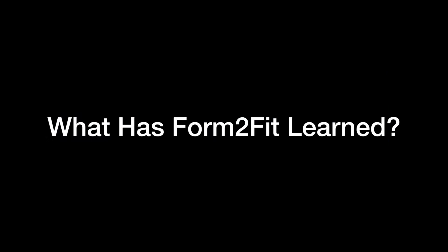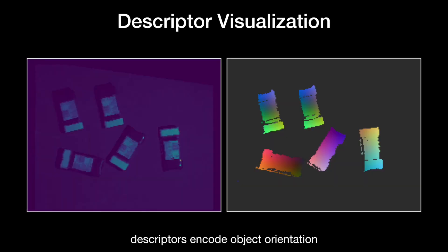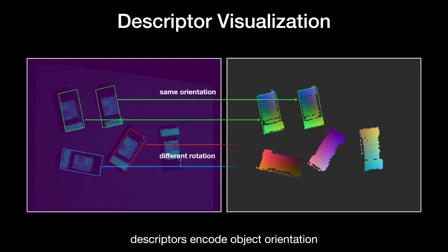To explore what the object descriptors generated by the matching network have learned to encode, we compute and visualize the t-SNE embedding of the learned feature descriptors for different kits. Specifically, we reduce the 64-dimensional descriptor vectors to three dimensions for color-space visualizations. We observe three things. First, that the descriptors have learned to encode rotation, since the same objects oriented the same way have identical descriptors, and those with different orientations have different descriptors.